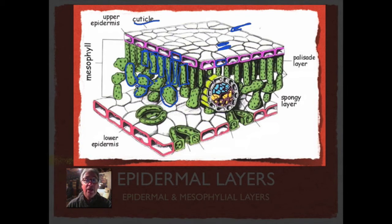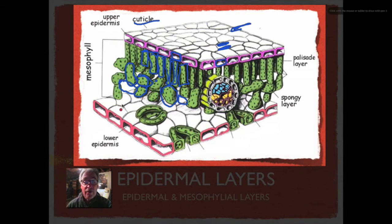The spongy mesophyll also helps with the production of sugars and oxygen. In some plants there isn't much differentiation between the two layers. The spongy mesophyll creates a lot of airspace, and this airspace is really important because it serves as the area where oxygen and CO2 are exchanged.